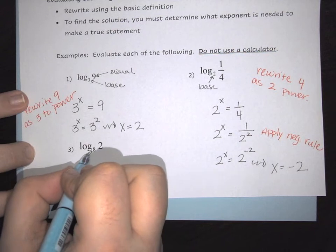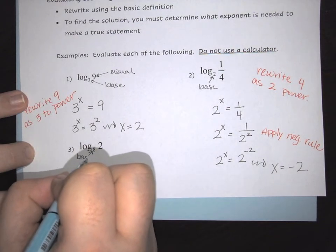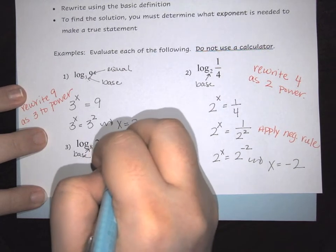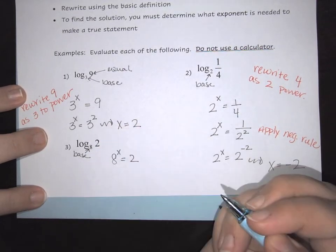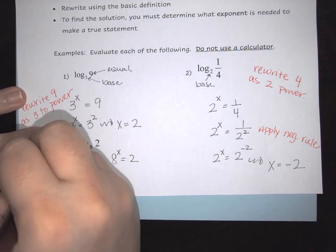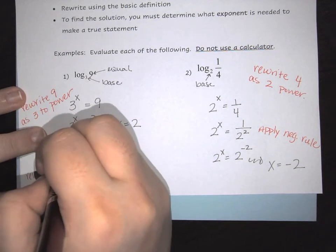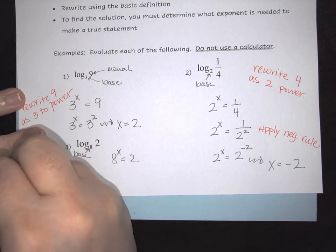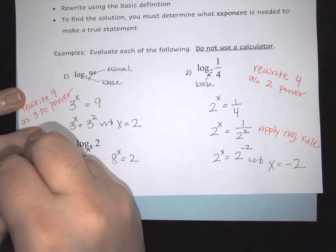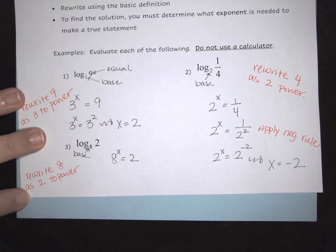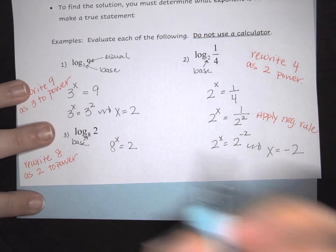Last, the 8 is your base. So here this is going to tell me that you have 8 to the x equals 2. This time I want to rewrite the 8 as 2 to the power. Here 8 is the same as 2 cubed.